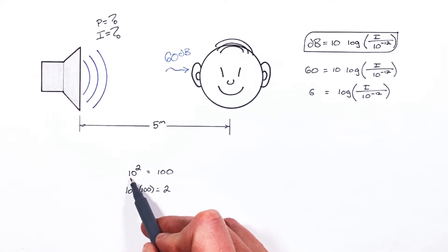So a log function simply runs this 10 to some exponent function backwards. 10 to the 2 equals 100. If we say log of 100 that's going to tell us 10 to the exponent which will yield a value of 100.